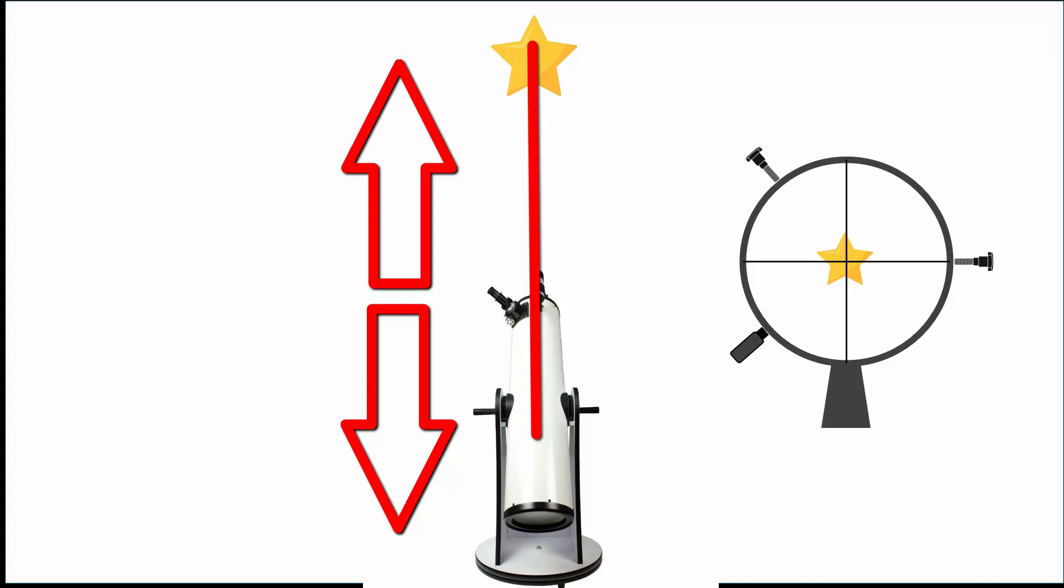However, the plumb bob technique does become harder to use when your desired target is very high in the sky directly above you.